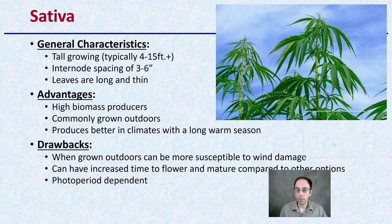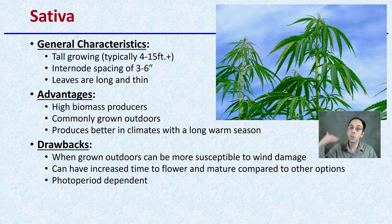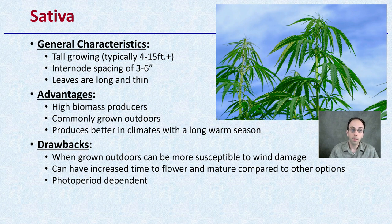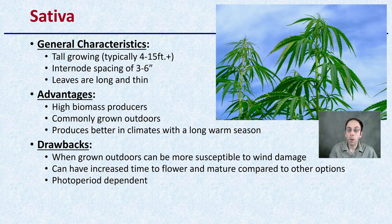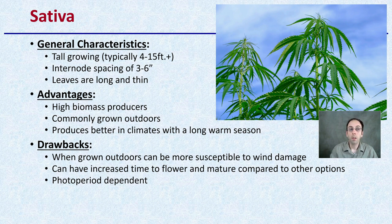Looking first at sativas: they generally grow very tall, from 4 to 15 feet, with internode spacing of about 3 to 6 inches, and their leaves are long and thin. The advantage is that they produce high biomasses. They're commonly grown outdoors and perform better in climates with a long, warmer growing season. The drawbacks are that when grown outdoors, they can be more susceptible to wind damage due to their height, and they have increased time to flower and mature. This is also a photoperiod-dependent strain.